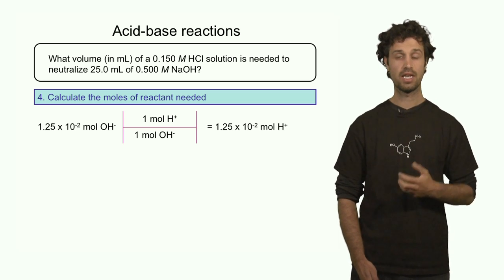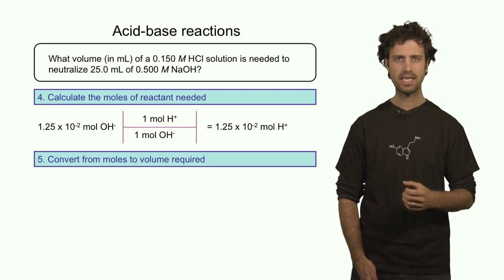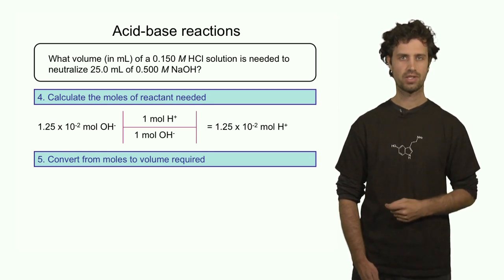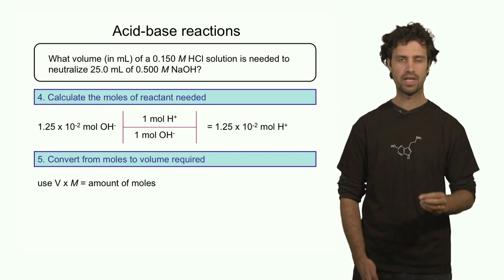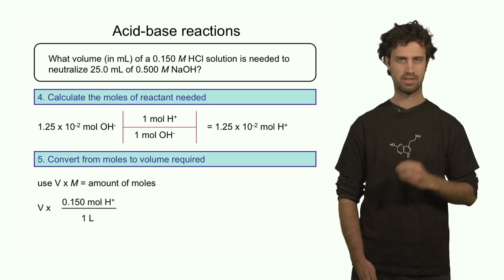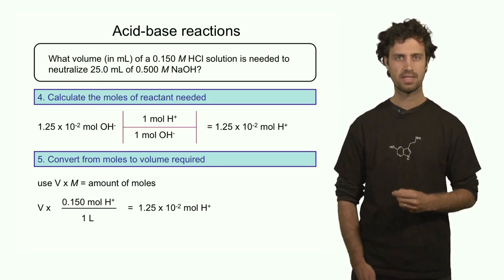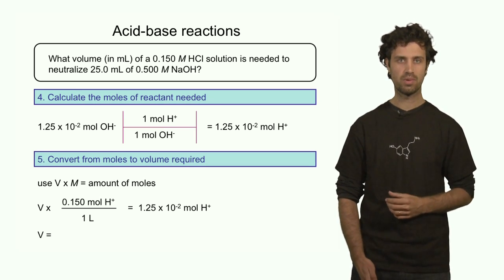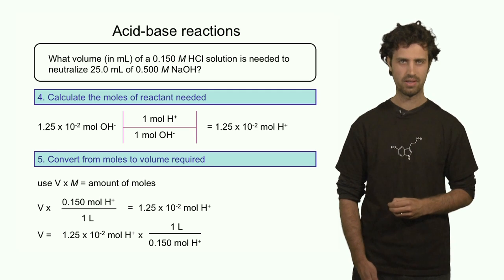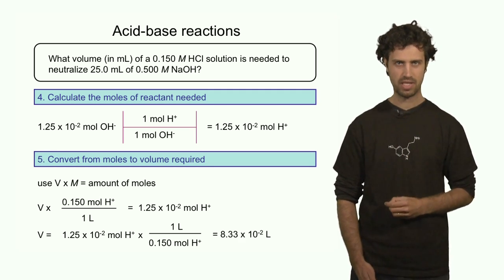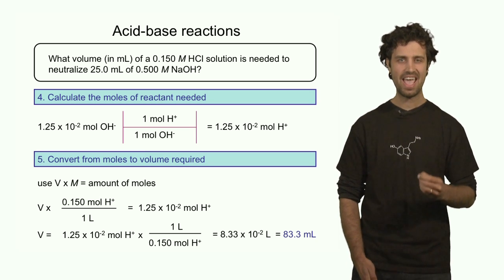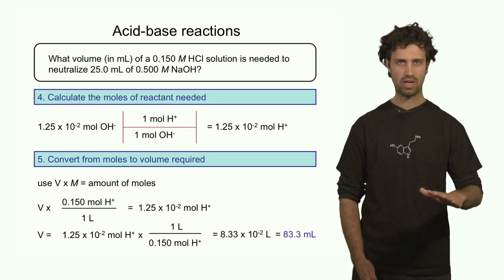This is how many protons we have to add in order to neutralize the original basic solution. The last step is to convert the number of moles of protons into the volume of hydrochloric acid solution that we need to add. We know that volume times molarity equals the amount of moles, so volume times 0.15 molar must equal 1.25 × 10⁻² moles of protons. That means volume equals 1.25 × 10⁻² moles divided by 0.15 molar, giving us 8.33 × 10⁻² liters, or 83.3 milliliters. So we have to add 83.3 milliliters of hydrochloric acid to neutralize the basic solution.